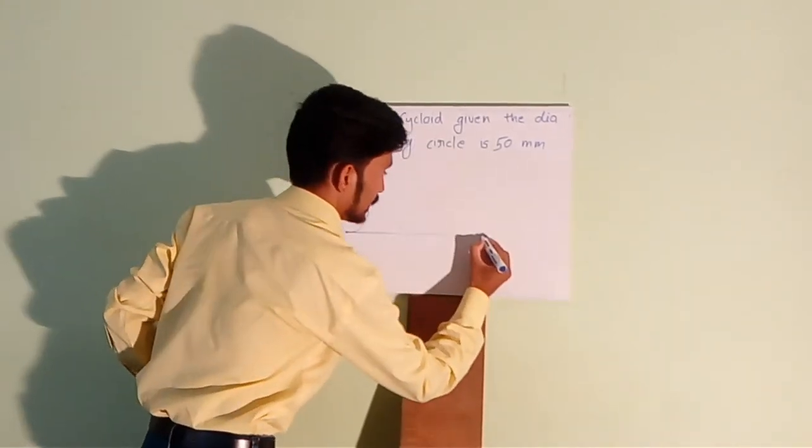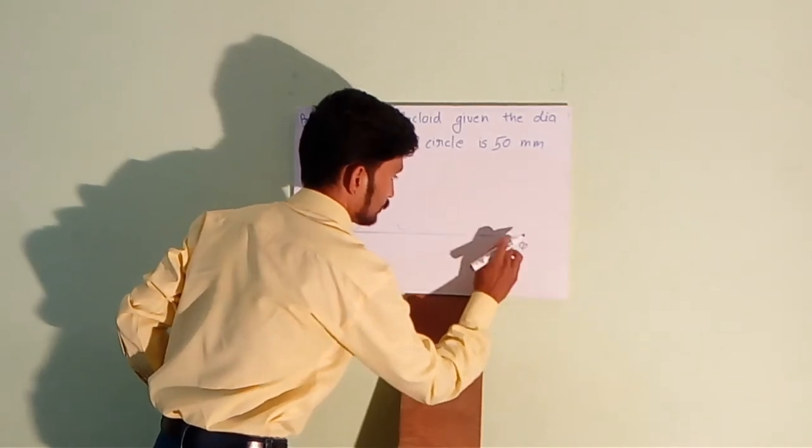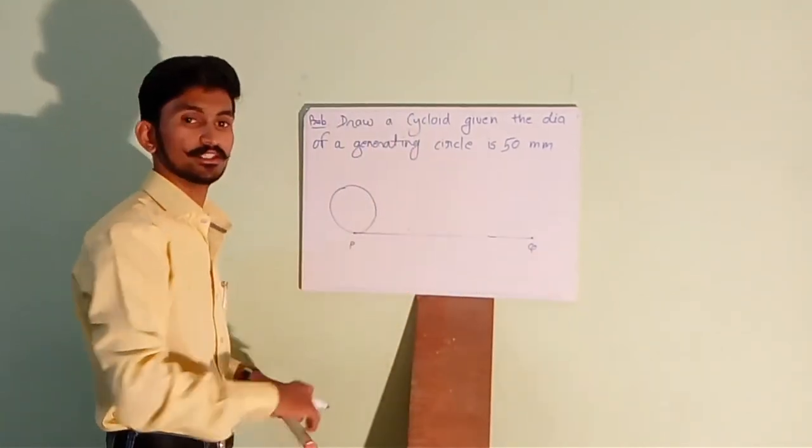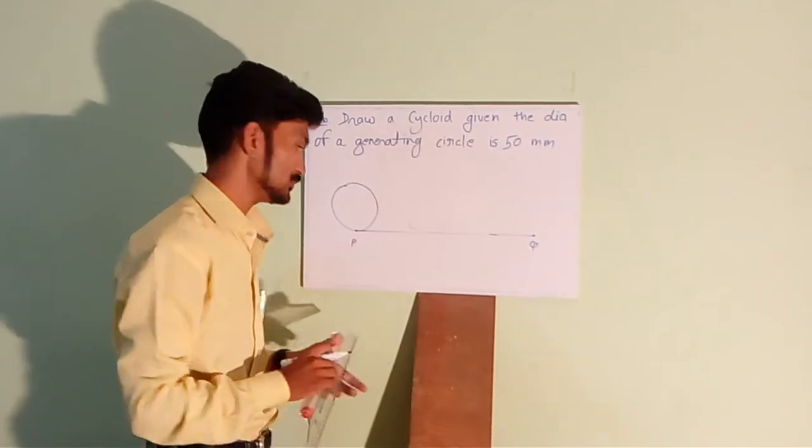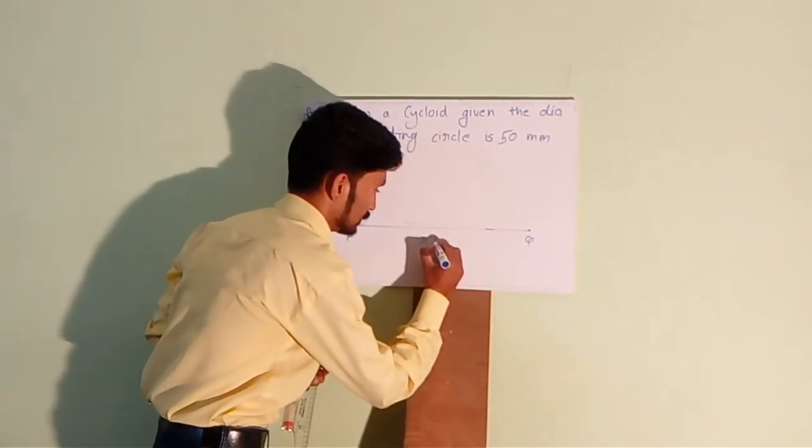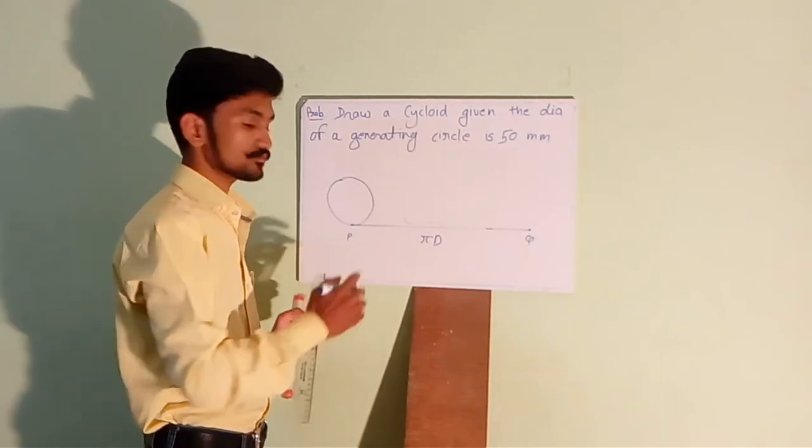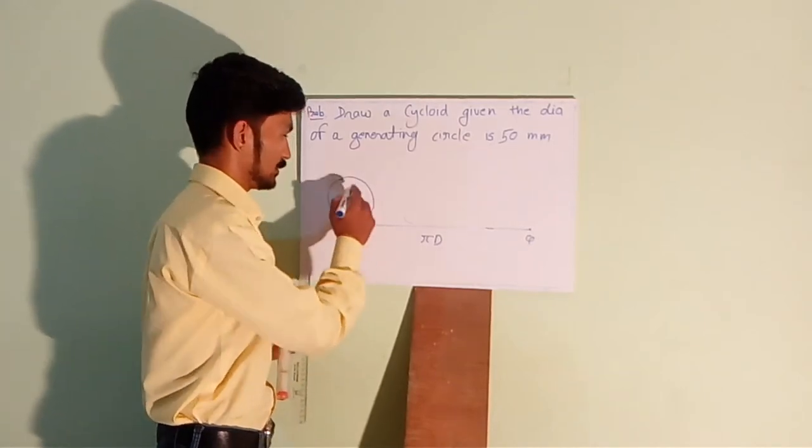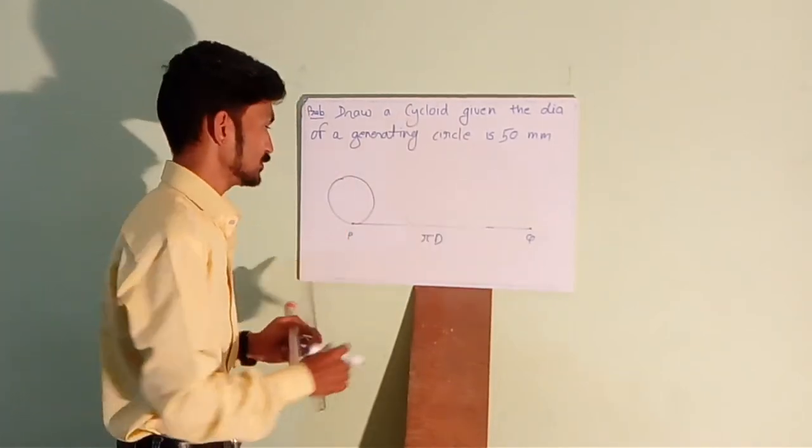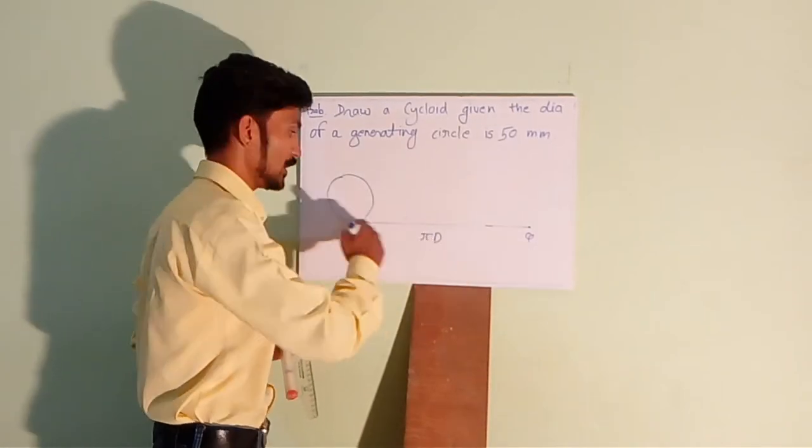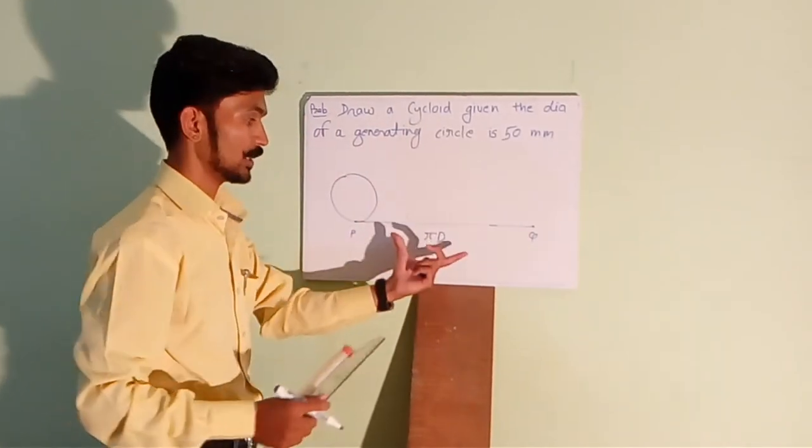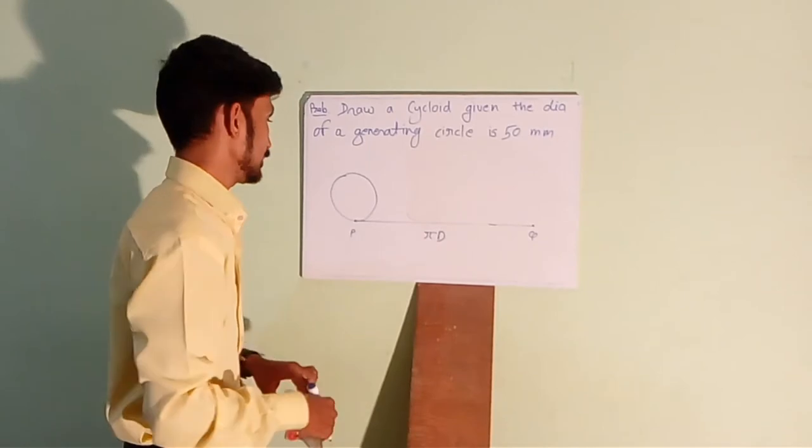Then, extend this line up to Q such that the length of the line should be pi times D which is the perimeter of the circle, where D is the diameter of the circle. This is how you can calculate the perimeter and draw the line of the same length.